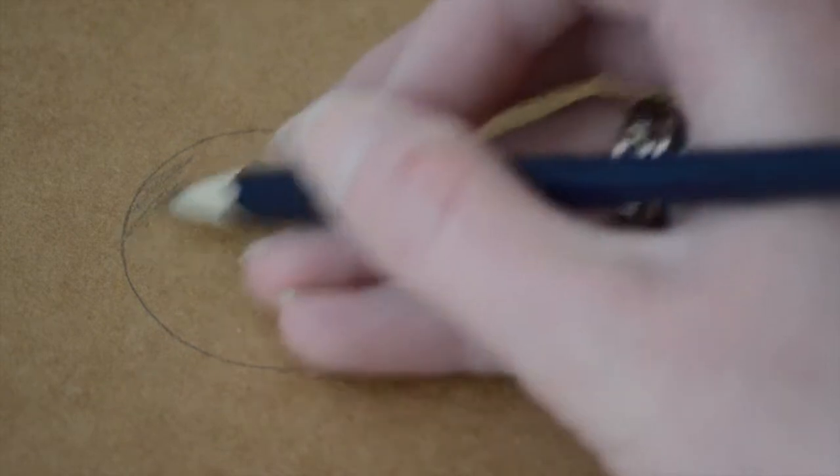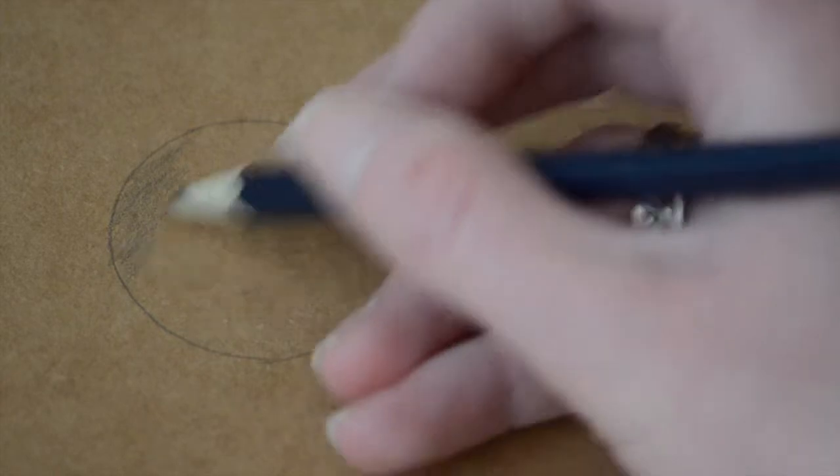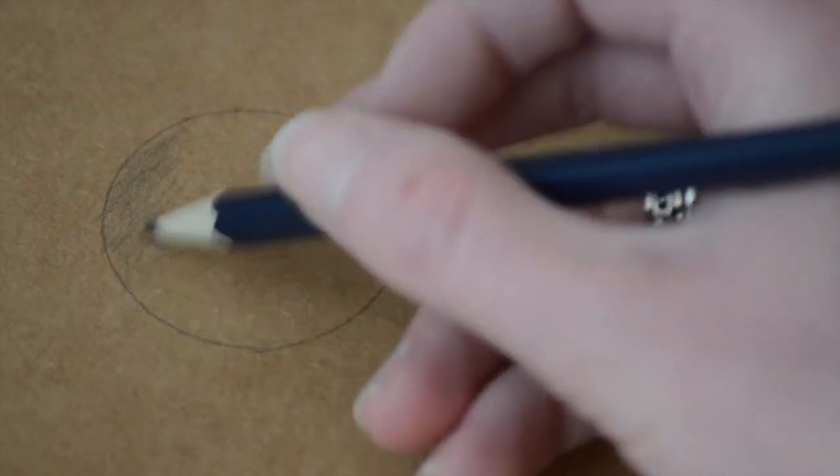Start off by putting a basic layer of shading where you know the darker patches of the fur are going to be and leave the patches that you know will be lighter unshaded.